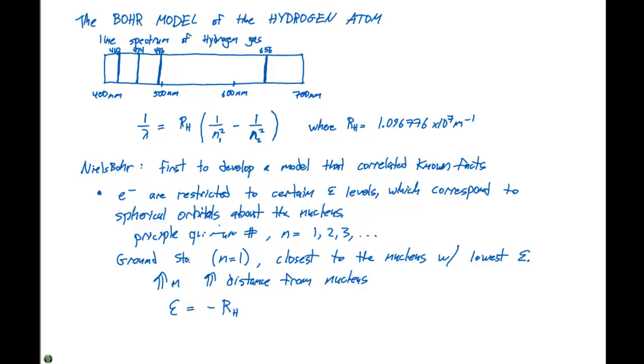So we can set up an expression now where the energy is equal to minus RH, which is our Rydberg constant, times one over N squared.